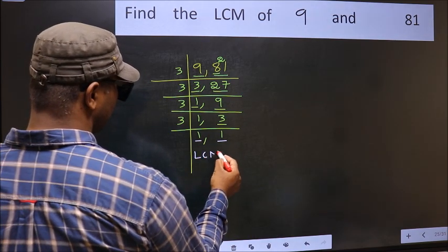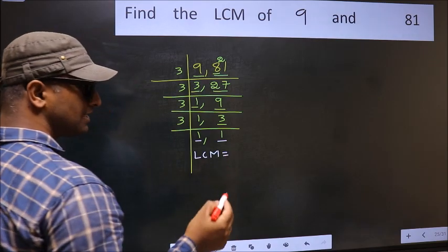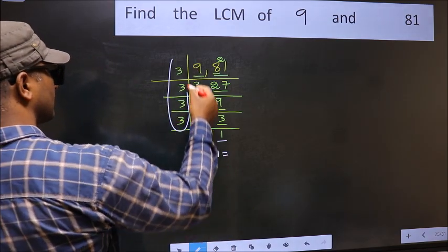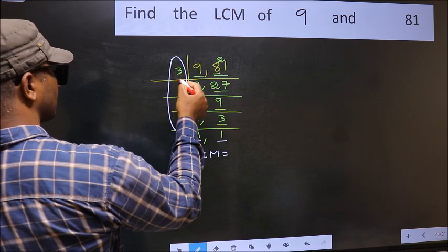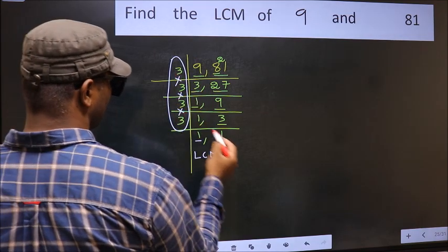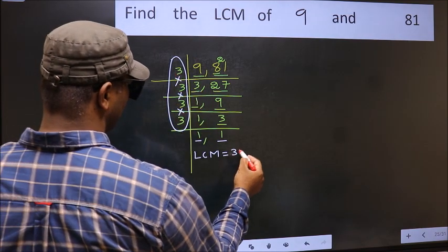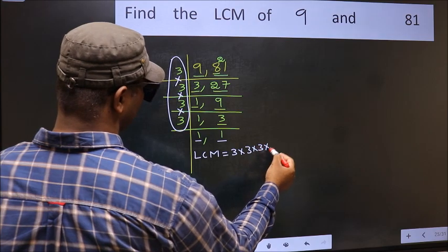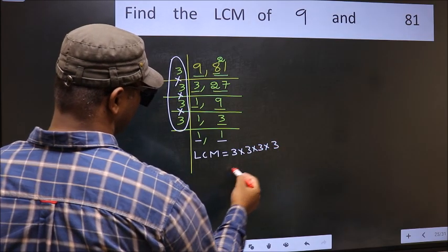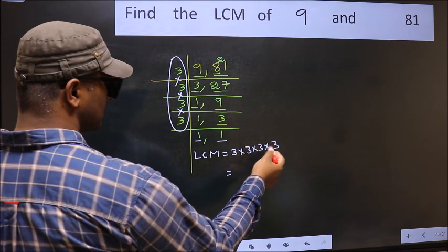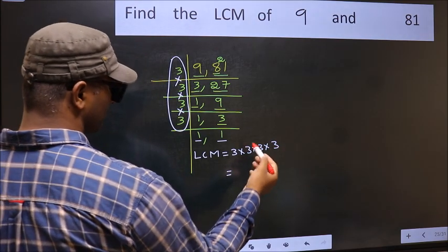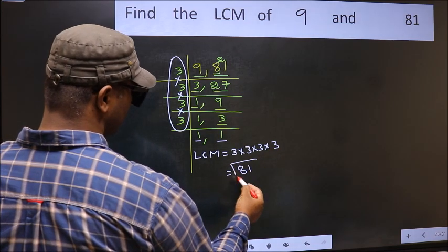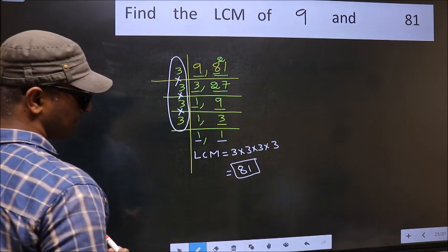So our LCM is the product of these numbers. That is 3 times 3 times 3 times 3 times 3. When we multiply these numbers, we get 81 as our LCM.